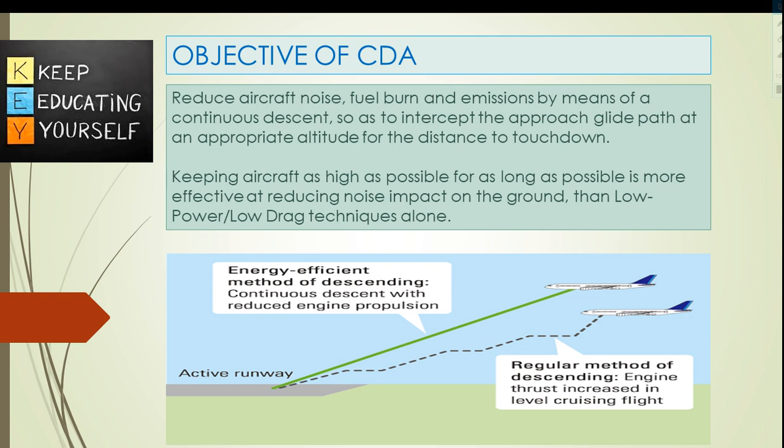Low power, low drag technique is a noise abatement technique for arriving aircraft in which the pilot delays the extension of wing flaps and undercarriage until the final stages of the approach, subject to compliance with ATC speed control requirements and the safe operation of the aircraft. The conventional descent requires thrust adjustments, as aircraft thrust will be increased in most cases since the aircraft has to regain the vertical flight profile interrupted due to some constraint.